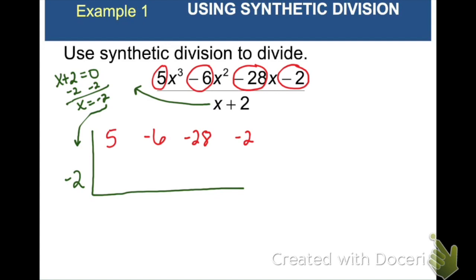The first thing we're going to do is bring our 5 down. Think of it as adding it down. And now we're going to multiply it by negative 2. We get negative 10. Again, we're going to add down. We get negative 16. And then we're going to multiply that negative 16 by negative 2. We get 32. Add down, we get 4. Multiply 4 times negative 2, we get negative 8. And then add down, we get negative 10.